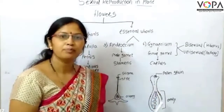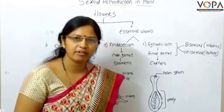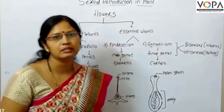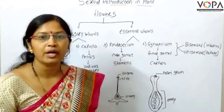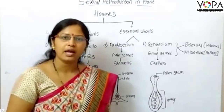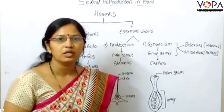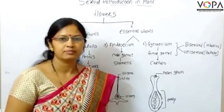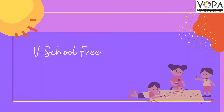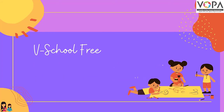Pollination occurs in two ways: one is the biotic factor and another is the abiotic factor. Biotic factors include insects and animals, while abiotic factors include air and water.